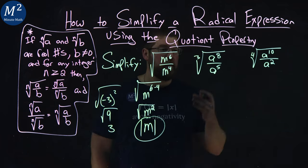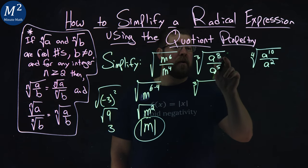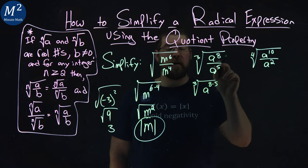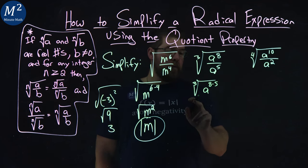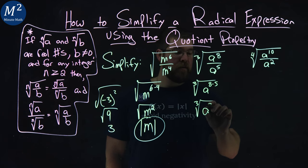Second one, same idea. We're going to subtract the exponents. Third root of a to the eighth over a to the fifth. That's a to the eight minus five power, subtracting the exponents. Third root: a to the eight minus five is the third root of a to the third power.